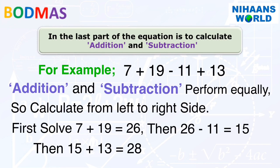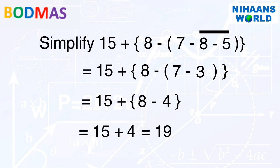Friends, let's solve another example. First, remove the bar: 8 minus 5 is equal to 3. Then, remove the common bracket: 7 minus 3 is equal to 4. Then, remove the curly bracket: 8 minus 4 is equal to 4. So, 15 plus 4 is equal to 19.